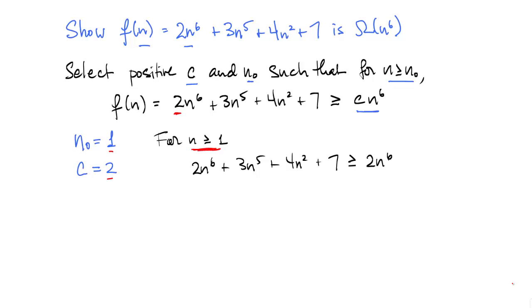The only thing we need to do is observe that as long as n is positive, and we know that n is positive because n is greater than or equal to 1, then all of the lower order terms with exponents less than 6 are also positive.